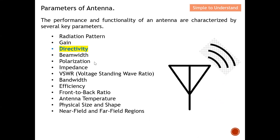In part 3 I discussed radiation pattern, and in part 4 I discussed antenna gain — antenna gain equals efficiency multiplied by directivity, which is the key difference between gain and directivity. In the next video I'll focus on beamwidth, but in this video I'll explain the key difference between directivity and beamwidth, as there is a significant difference between these two.